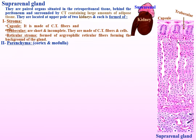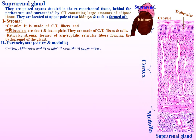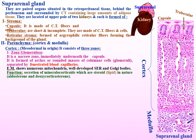Parenchyma is made of cortex and medulla. The cortex is mesodermal in origin and consists of three zones. Zona glomerulosa is a narrow zone immediately underneath the capsule. It is formed of arches or rounded masses of columnar cells, separated by fenestrated blood capillaries.